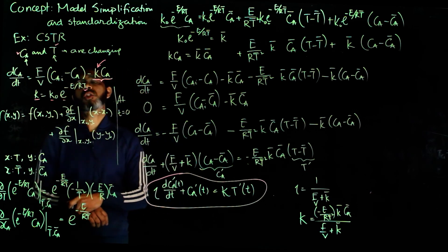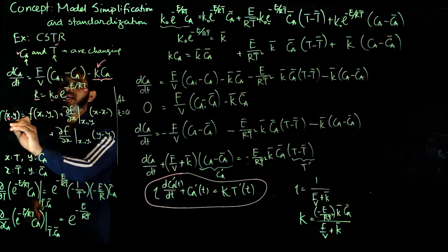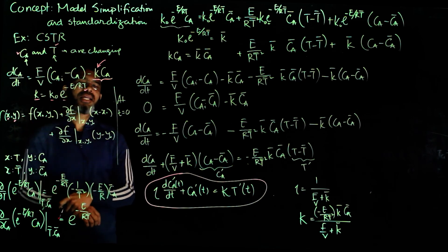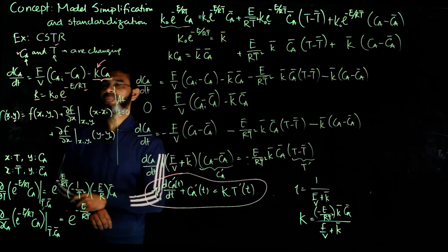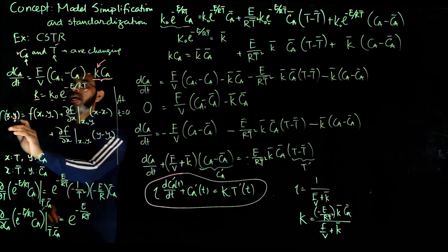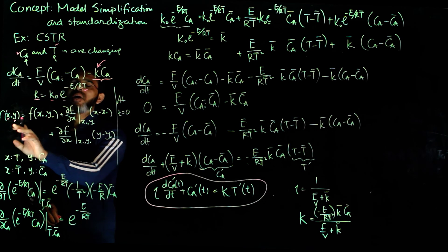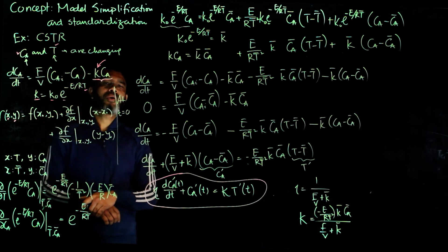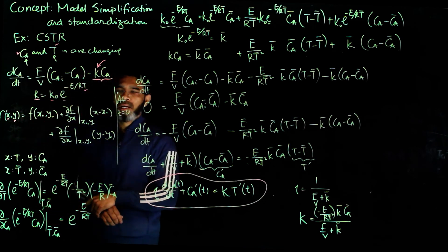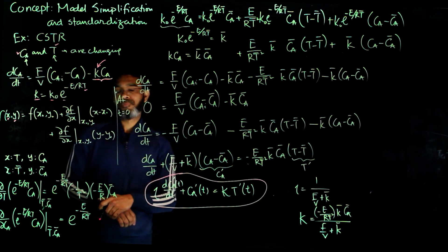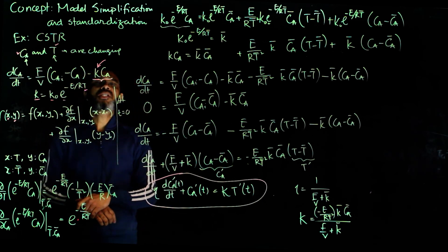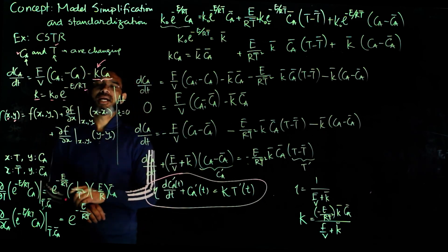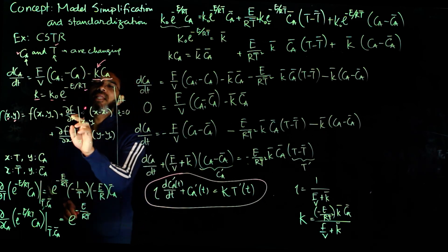When there are two variables X and Y, the bivariate Taylor series up to the linear term becomes: f(X,Y) equals f(X-naught, Y-naught), where X-naught and Y-naught are the coordinates around which you are doing the linearization.